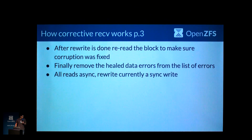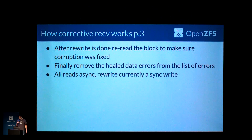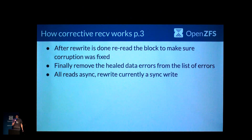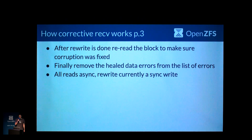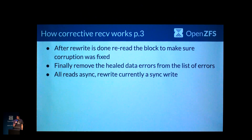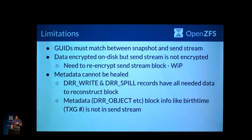If the checksum matches, we can issue a ZIO rewrite and rewrite that block. After the rewrite, we read the block from disk to make sure it was fixed, and if it was indeed fixed, we can remove that block from the list of errors that you see in zpool status minus v — the list of persistent errors. Currently all of the reads are async, but the actual rewrite ZIO is sync. That may or may not change — it makes it a little bit simpler to do sync IO for the rewrite, but I'm not sure that's the best approach.